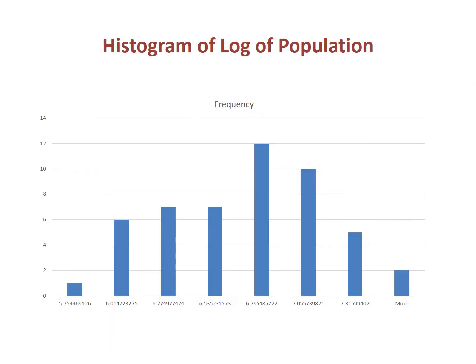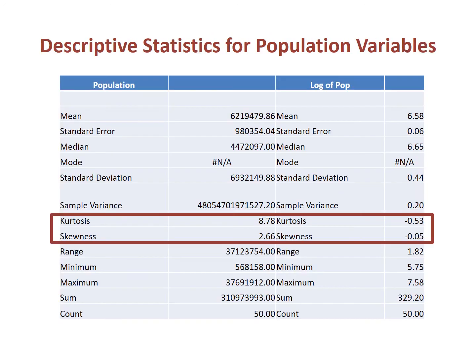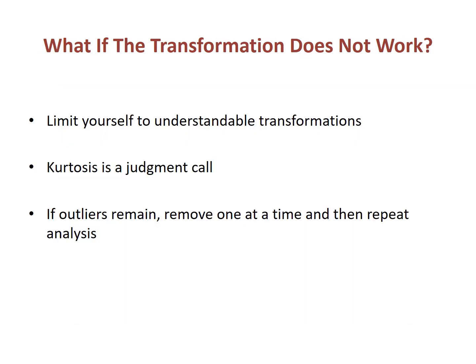Here is the histogram of the log of population. Notice how the curve looks much more normal now, and there are no points standing apart from the main distribution. Here are the descriptive statistics for population and its logged variable side by side — notice how the logarithmic transformation brings the skewness and kurtosis within acceptable levels. We lucked out: our first transformation was successful. If it were not initially successful, we would move one rung at a time until we were done. Normally we limit ourselves to only a few rungs on the ladder because the data can become so transformed that it becomes hard to describe what we did, even if the transformation is mathematically acceptable.